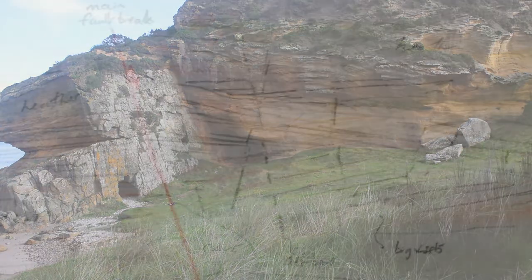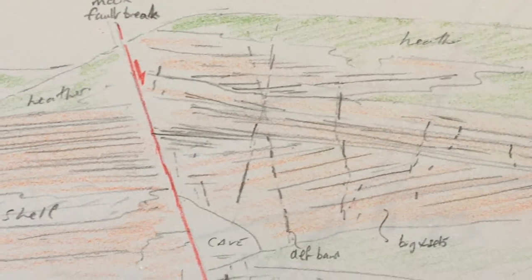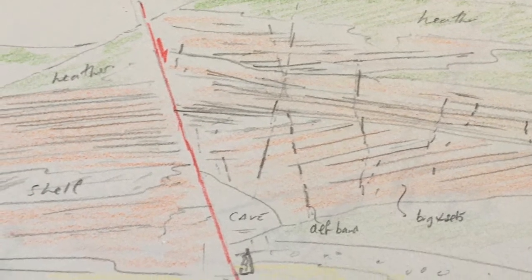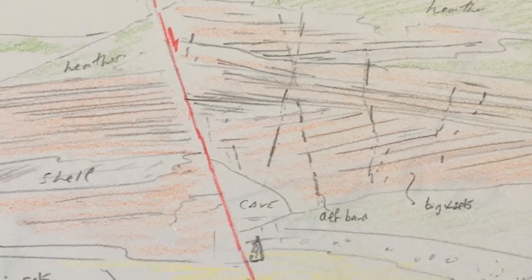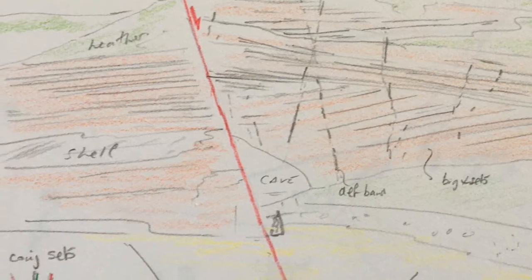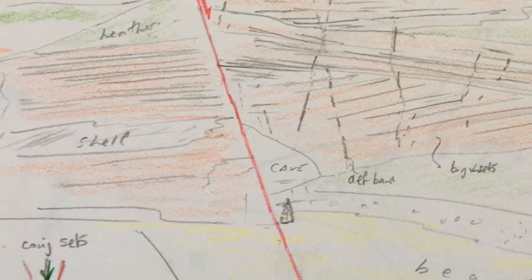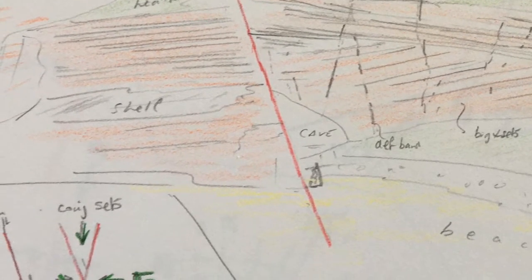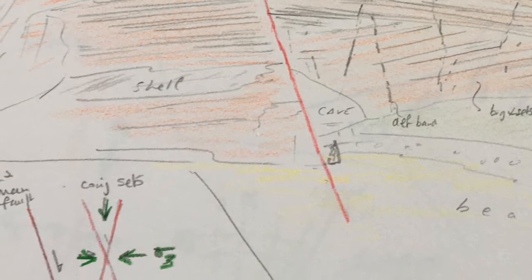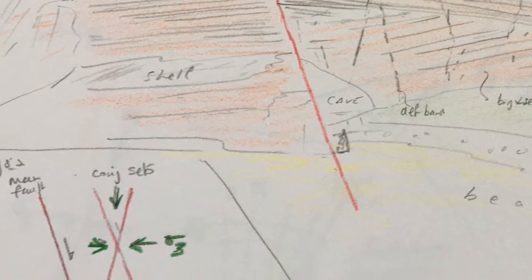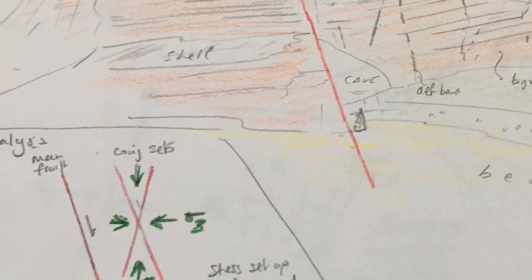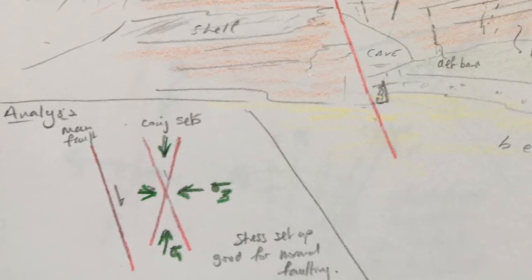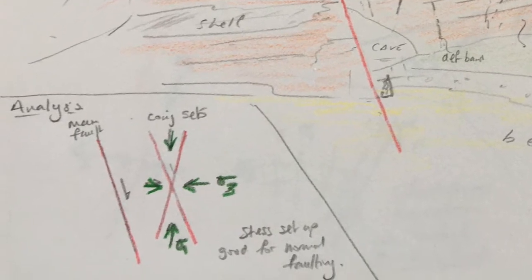The pattern of micro-faults defines conjugate pairs, and we can infer from these the stress regime under which they formed. The maximum compressive stress, sigma1, bisects the acute angle and therefore was vertical, while sigma3, the minimum compressive stress, was horizontal. This is consistent with the Klashach fault being a normal fault.